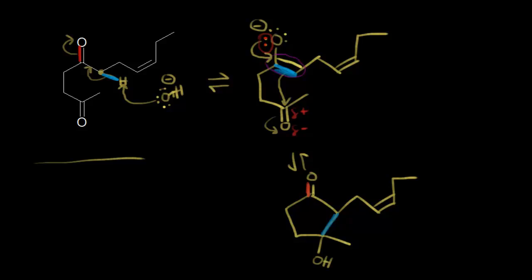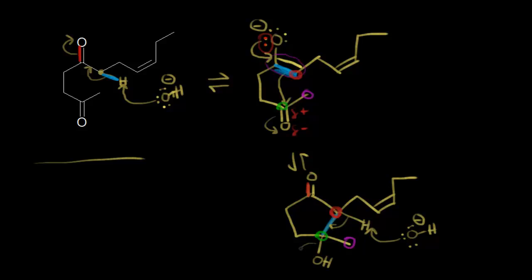Identifying some carbons: this carbon right here is this carbon, and this carbon right here is this carbon, just so it's clear. Going back to our alpha carbon, there's an acidic proton on that alpha carbon. Our base — hydroxide — could come along and take that acidic proton. With a negative one formal charge, hydroxide takes this proton, these electrons move in here, and you lose hydroxide.